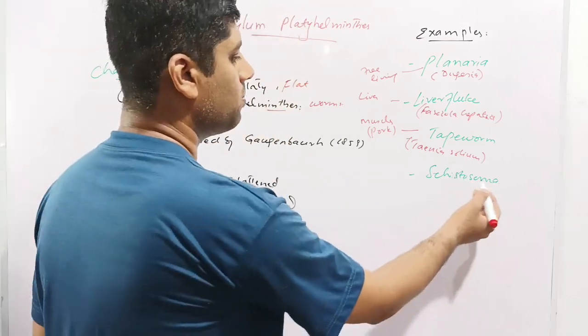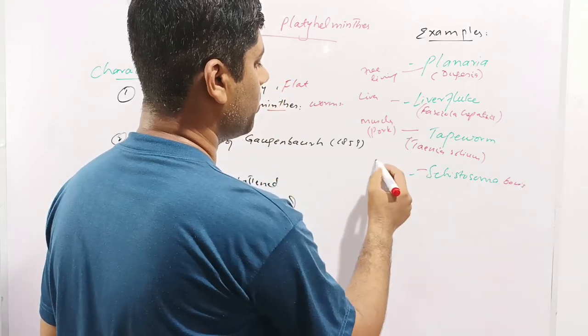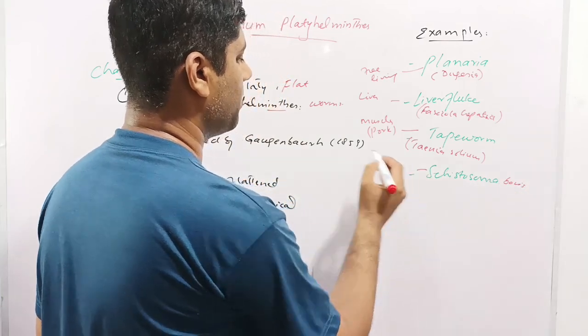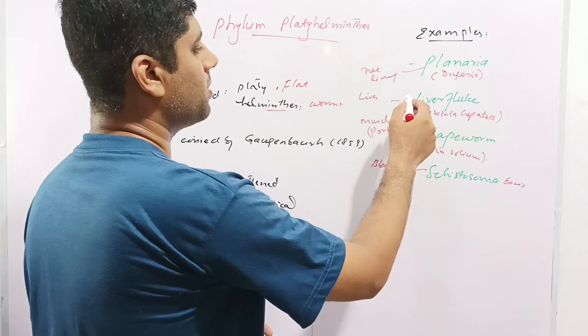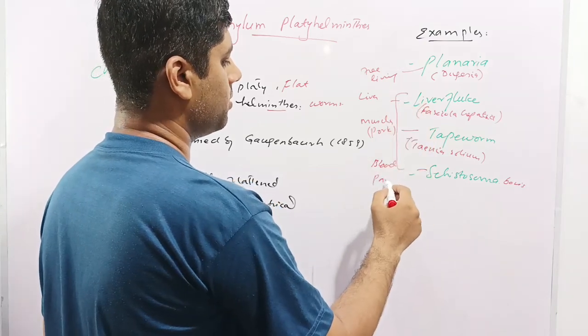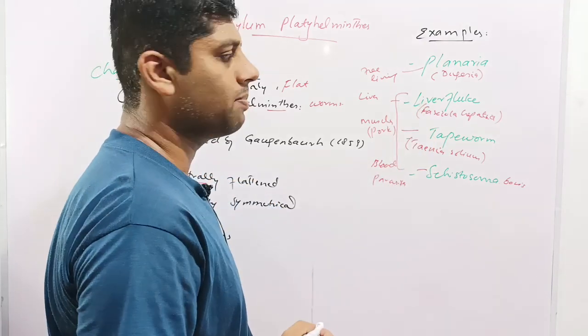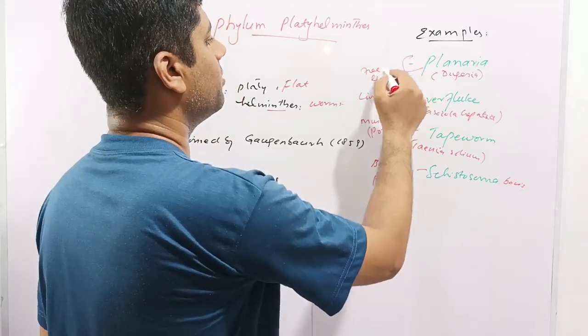The next is schistosoma. Its complete name is Schistosoma bovis and it is found in the blood of cows or animals. All three members—liver fluke, tapeworm, and schistosoma—are parasites, while planaria is free-living.